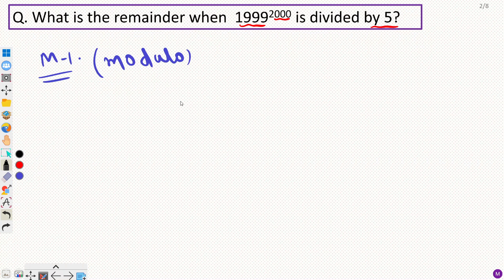Now in modulo you will be knowing the notation is A congruent to B modulo C. This means that B is my remainder when A is divided by C.